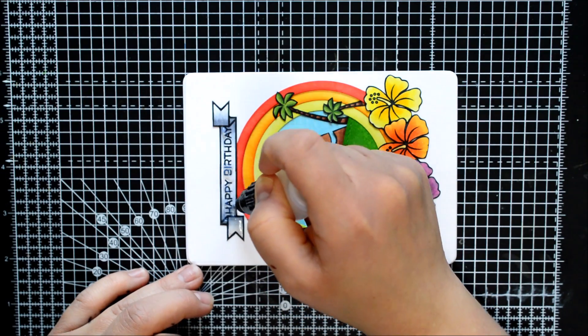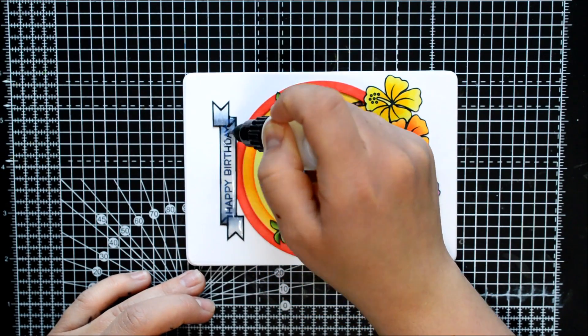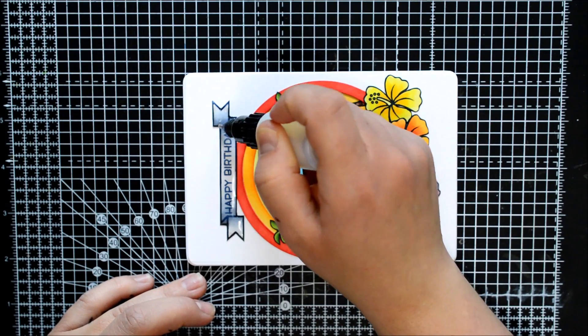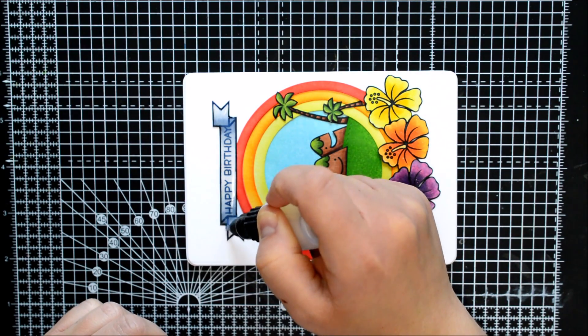And then I add a bit of Wink of Stella onto my card. My Wink of Stella is pretty dry so it's very subtle but I do like a bit of glitter.